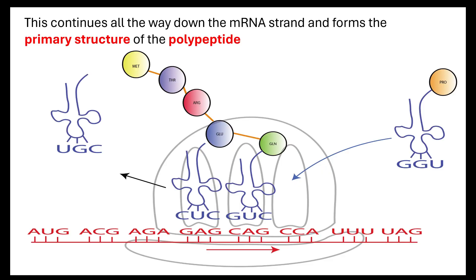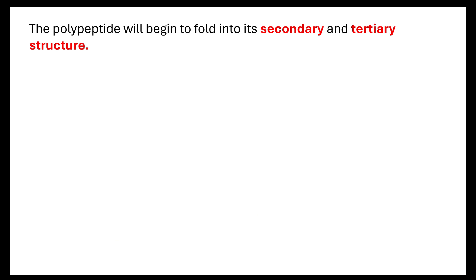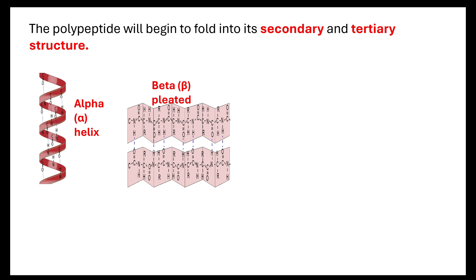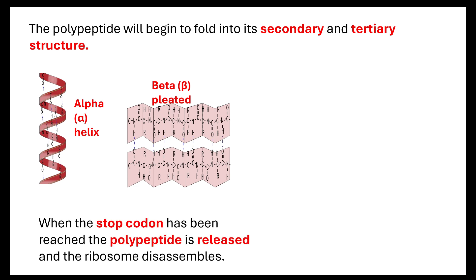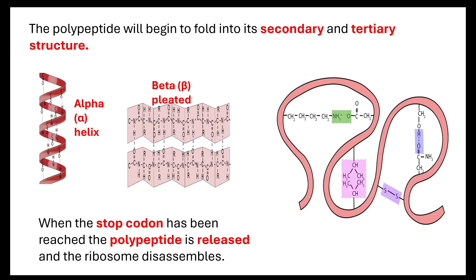So, this continues all the way down the mRNA strand and that's what forms your primary structure of the polypeptide. So, it will make its way all the way down. It will keep going. And as it's building the primary structure, as it's building the polypeptide, the polypeptide will automatically start to fold into its secondary structure, alpha helix or beta-pleated sheets, and then into the tertiary structure until a stop codon is reached.